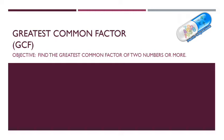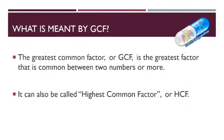Hello. Greatest Common Factor — GCF — find the greatest common factor of two numbers or more. The Greatest Common Factor, or GCF, is the greatest factor that is common between two numbers or more. It can also be called Highest Common Factor, or HCF. So GCF and HCF mean the same thing.